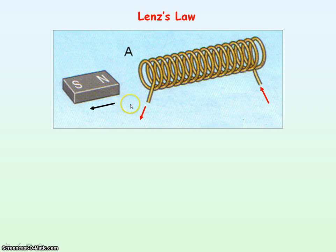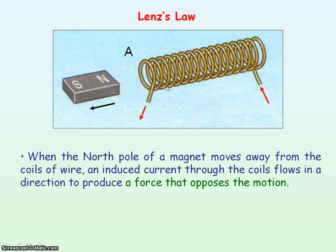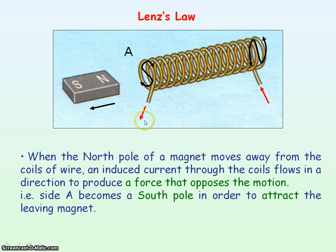For the case when the magnet is moving away from the coils of wire, the induced current in the coil will produce a force in order to oppose the motion. That is, it will flow in a direction to create a south pole at end A that will attract the leaving magnet.